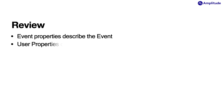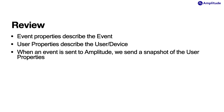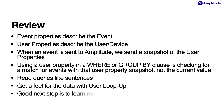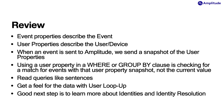Let's review. Event properties describe the event. User properties describe the user or their device. When an event is sent to Amplitude, we send a snapshot of the user properties. Using a user property in a where or group by clause is checking for a match for events with that user property snapshot, not the current value. Read queries like sentences — it's good practice. Get a feel for the data with user lookup. And finally, if you've got these concepts down, a good next step would be to learn about identities and identity resolution. We handle all the heavy lifting so you don't have to, but knowing how it works will make you that much more effective in Amplitude. Thank you, and we always welcome your feedback.